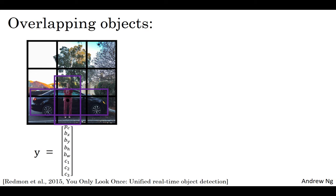So for that grid cell, if y outputs this vector where you're detecting three classes - pedestrians, cars, and motorcycles - it won't be able to output two detections. So I have to pick one of the two detections to output.